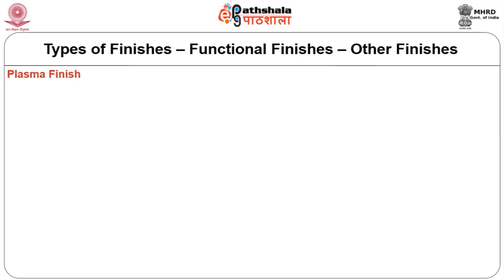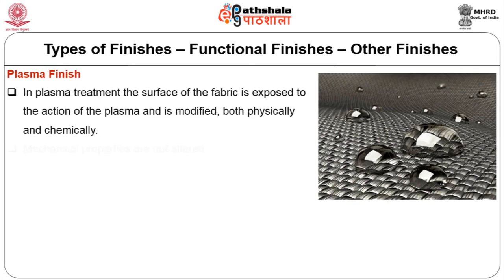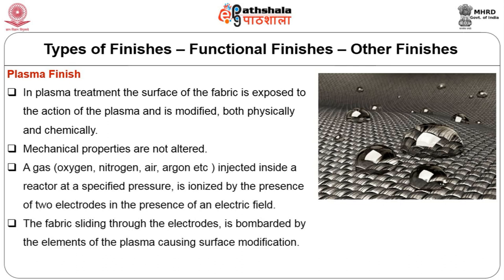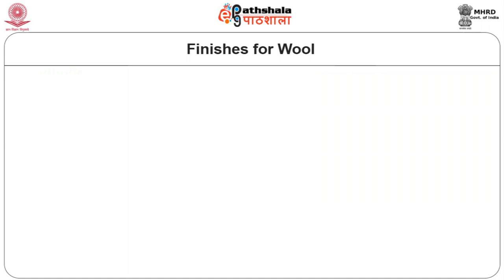Plasma finish: in plasma treatment, the surface of the fabric is exposed to the action of plasma and is modified both physically and chemically — the mechanical properties are not altered. A gas such as oxygen, nitrogen, air or argon is injected inside a reactor at a specified pressure. It is ionized by the presence of two electrodes in an electric field. The fabric sliding through the electrodes is bombarded by the elements of the plasma causing surface modification.